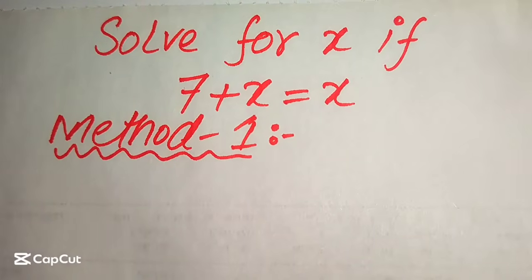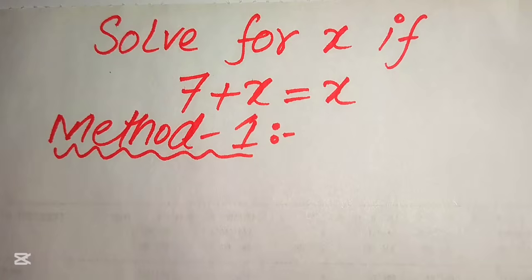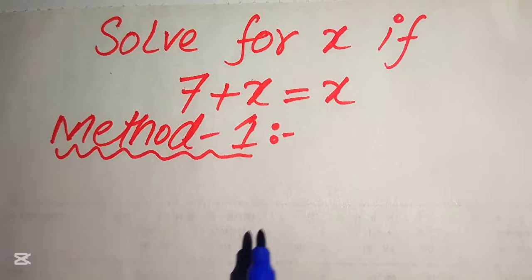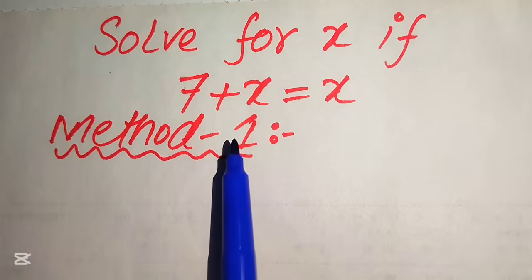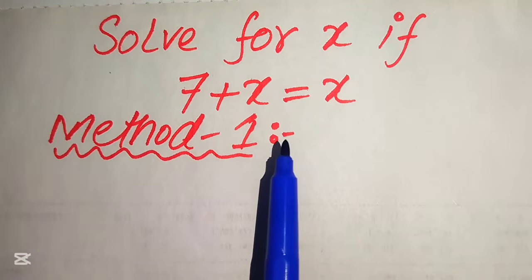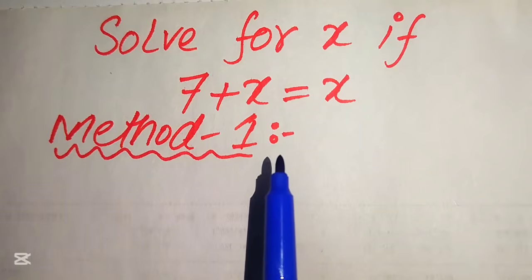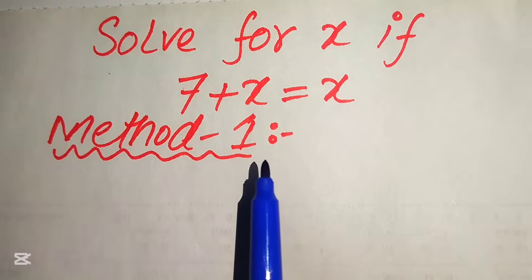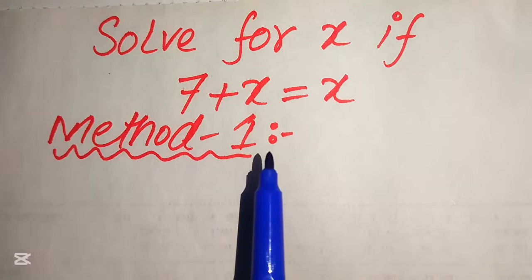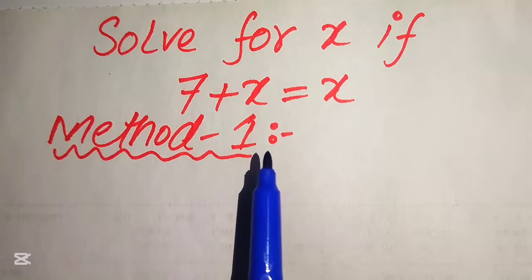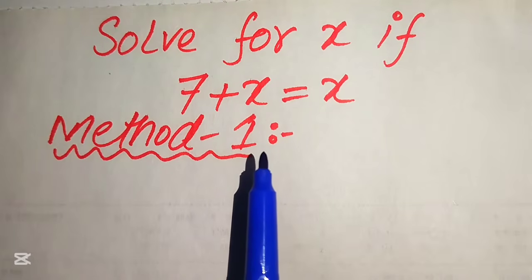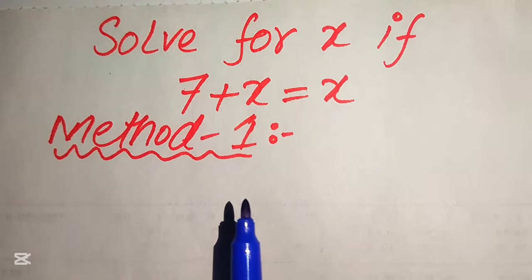Hello everyone, welcome. We have the problem √(7 + x) = √x and we will solve this for the values of x. I hope you like this method, but if you have any other method in mind, please don't hesitate to write it in the comment section. Now we solve this problem using two methods.